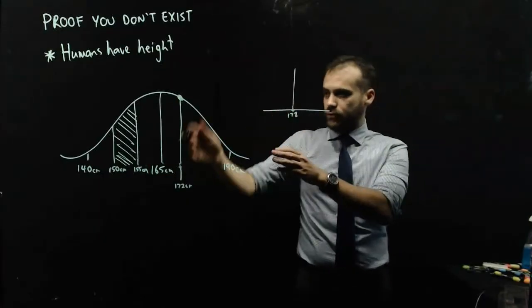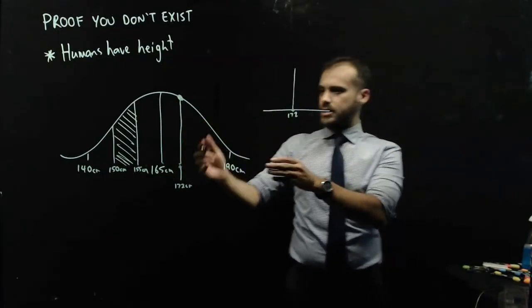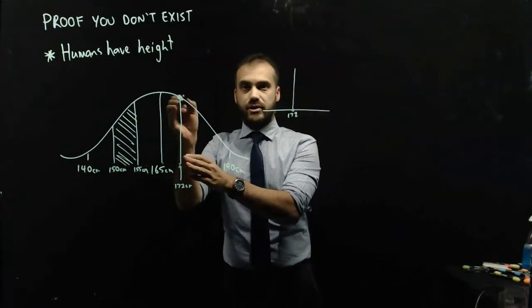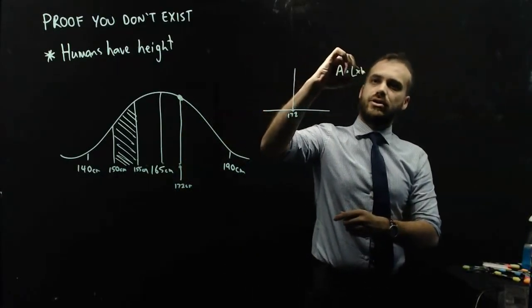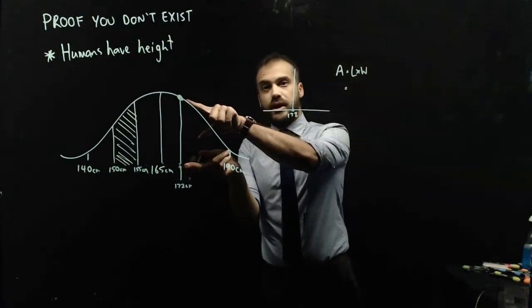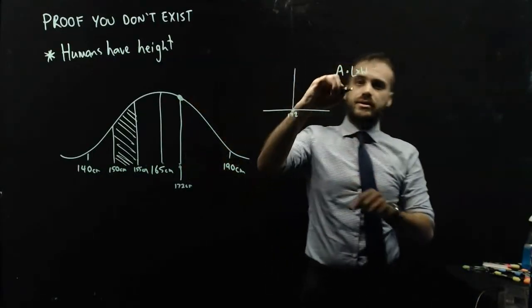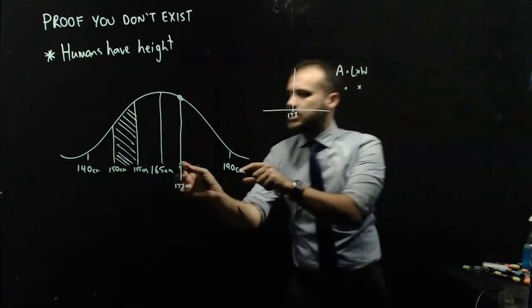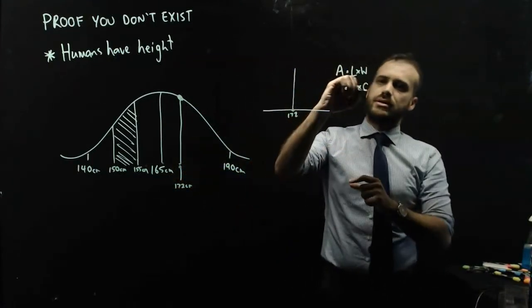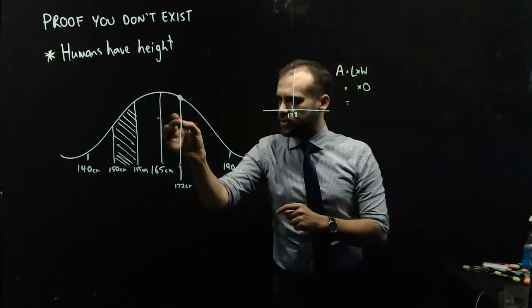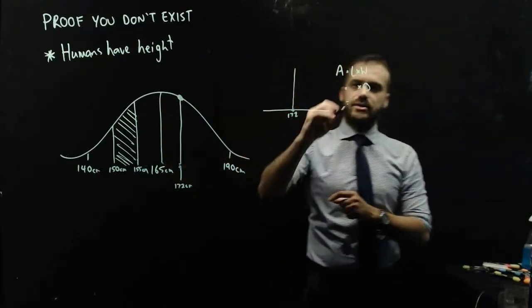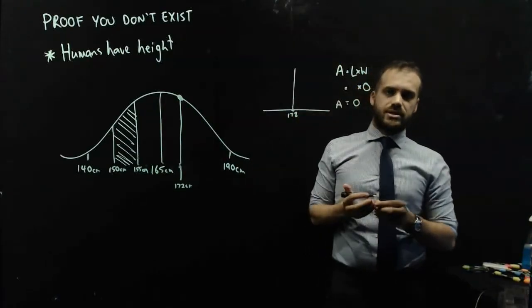So, our area formula for what can be approximated as a very thin rectangle, is area equals length times width. Now, I don't know what that height is, but I don't really care, because I can say with certainty that the width is zero. And therefore, the area of this very, very thin rectangle is zero.